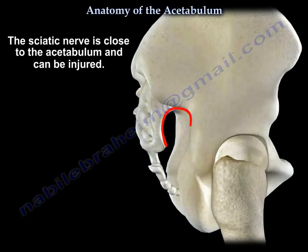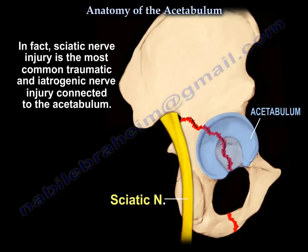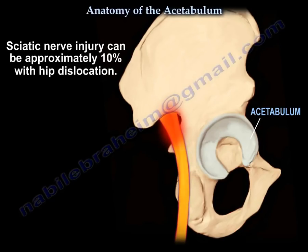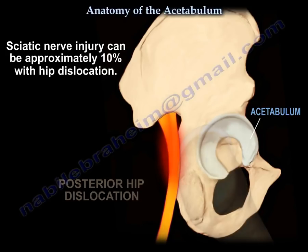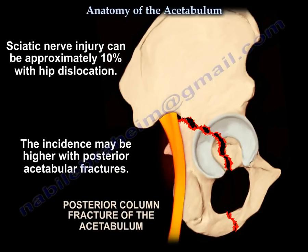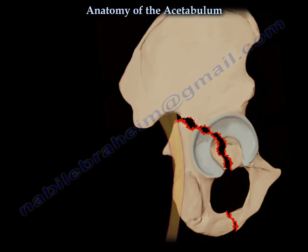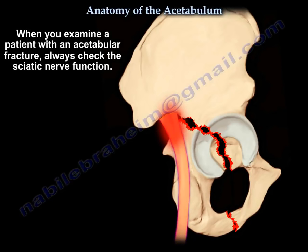The sciatic nerve is close to the acetabulum and can be injured. Sciatic nerve injury is the most common traumatic and iatrogenic nerve injury connected to the acetabulum. This nerve injury can occur in approximately 10% of hip dislocations, and the incidence may be higher with posterior acetabular fractures. When you examine a patient with an acetabular fracture, always check the sciatic nerve function.